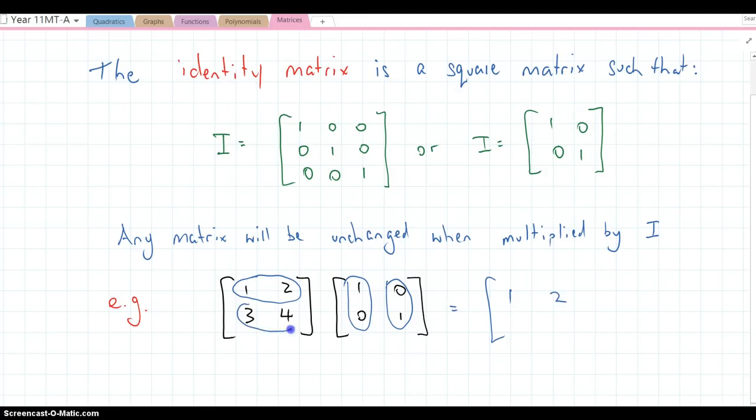Now we're going to go to the second row. 3 times 1 is 3 plus 0. The last row, the bottom row in the right column, 3 times 0 plus 4 times 1.